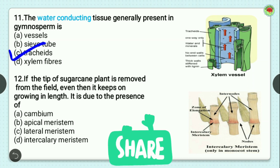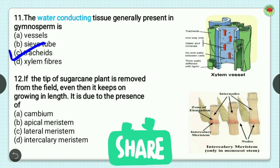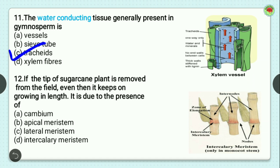Question number 12: if the tip of a sugarcane plant is removed from the field, it still keeps growing in length. This is due to the presence of? Options are cambium, apical meristem, lateral meristem, and intercalary meristem. If you cut a sugarcane plant from any part, it keeps growing because of intercalary meristem present at every internode. So the correct answer is option D, intercalary meristem.